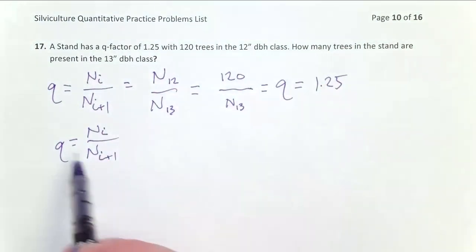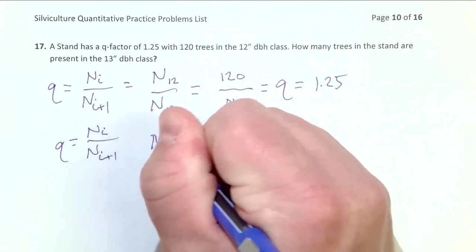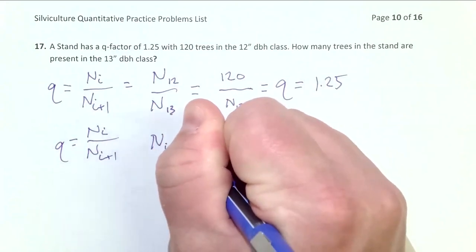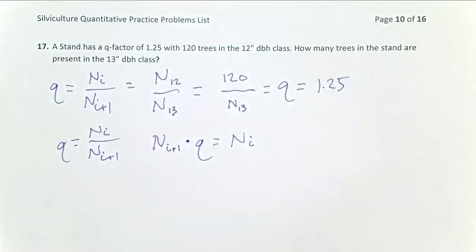I'm going to multiply both sides of the equation by this, so I get N sub I plus 1 times Q equals N sub I. Then I'm going to take this equation, and again...